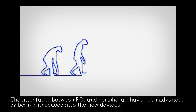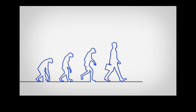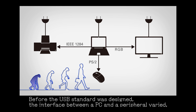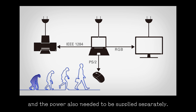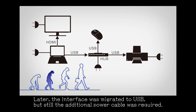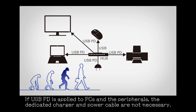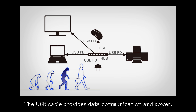The interfaces between PCs and peripherals have been advanced by being introduced into new devices. Before the USB standard was designed, the interface between a PC and a peripheral varied, and power also needed to be supplied separately. Later, the interface was migrated to USB, but still the additional power cable was required. If USB PD is applied to PCs and peripherals, the dedicated charger and power cable are not necessary — the USB cable provides both data communication and power.